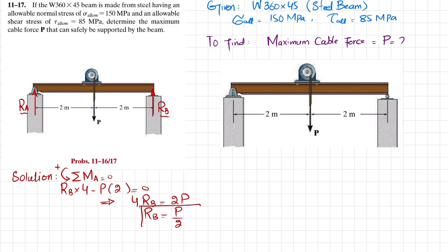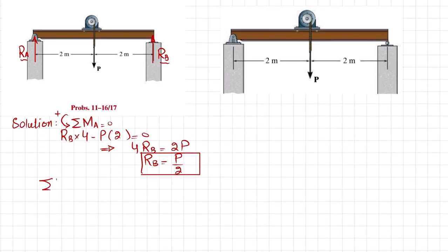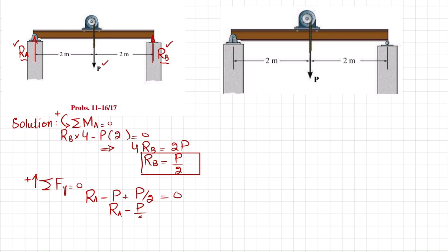Now using the second equilibrium condition — sum of all forces in the Y direction equal to zero, taking upward as positive — we get RA − P + P/2 = 0, which gives RA = P/2. So both reactions are equal to P/2.